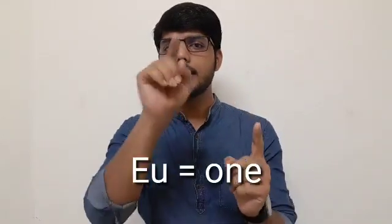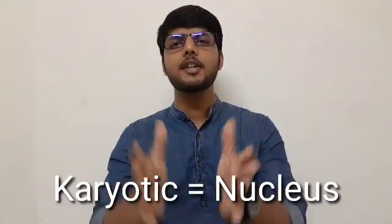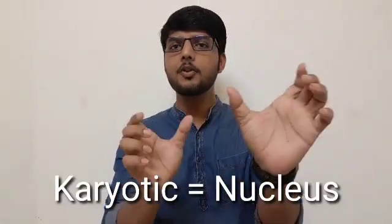Eukaryotic cell — the cell which has a nucleus. 'Eu' means one, and 'karyotic' means nucleus. So eukaryotic means one nucleus. Now what about the prokaryotic cell? Just think.